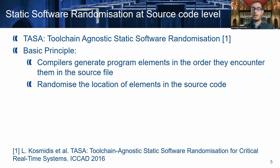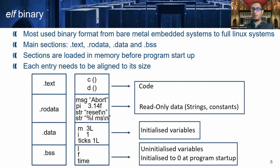Now we focus on a variant of static software randomization which is applied at source code level. We term this TASA, which stands for Toolchain Agnostic Static Software Randomization. TASA relies on a very simple observation that compilers generate program elements in the same order that they encounter them inside a source file. So if we modify the order inside the source file, this will also modify the way that things are mapped inside the executable. But before going into more details, let's explain the ELF binary executable format.